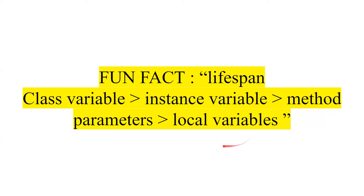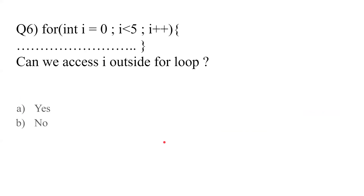Class variables have the highest lifespan throughout a Java program, and local variables have the lowest lifespan. In between, we have instance variables and method parameters.